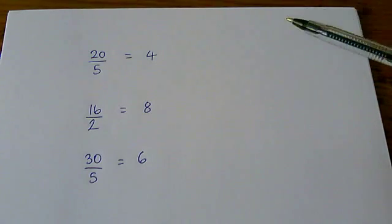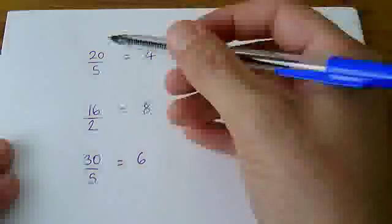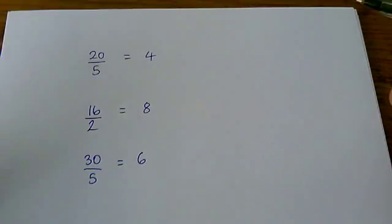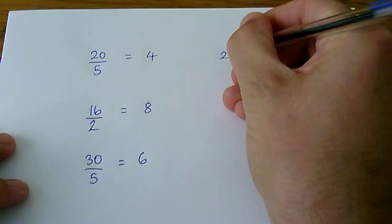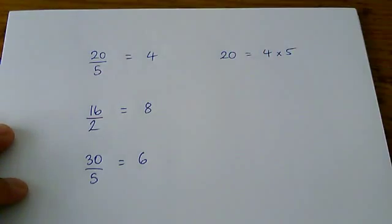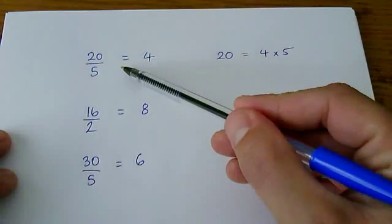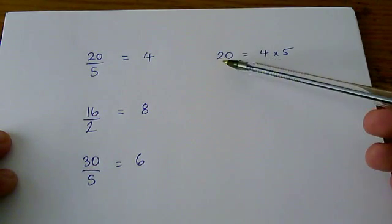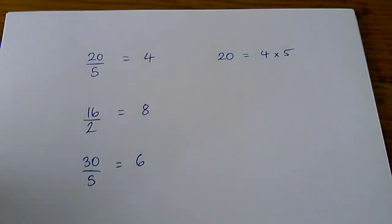Now, what you need to really understand about all of these is that you can rewrite these division relationships as multiplication relationships. So the reason we know that 20 divided by 5 is 4 is because we know our 4 and 5 times tables. Therefore, we know that 4 times 5 is another way of writing 20. It's the same relationship between the numbers just expressed in a different way.